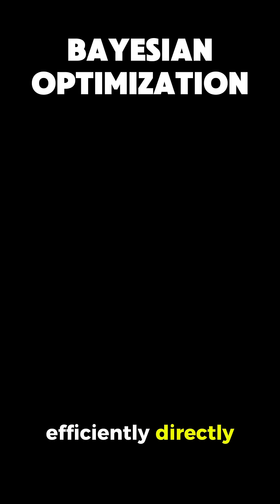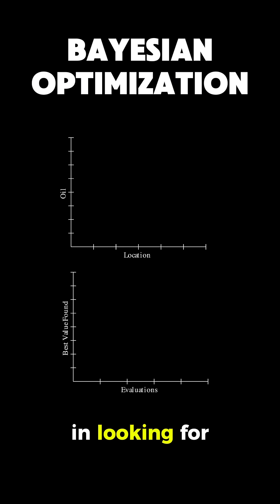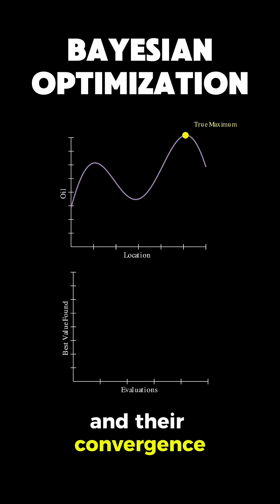To visualize this efficiently, let's compare how different search methods evolve when looking for maximum oil. Our graph shows the true distribution of oil on the left with each method sampling points and their convergence on the right.